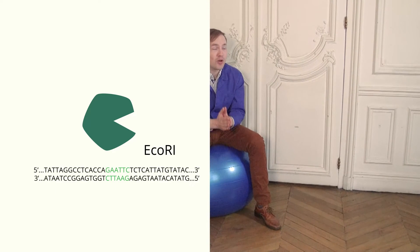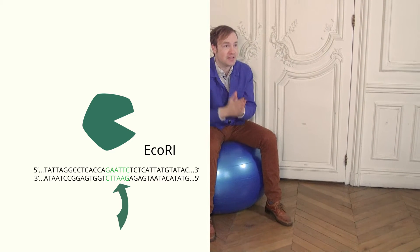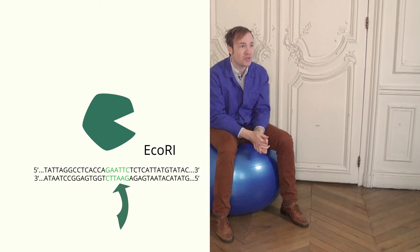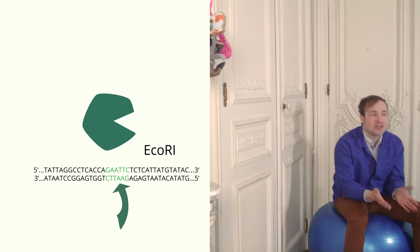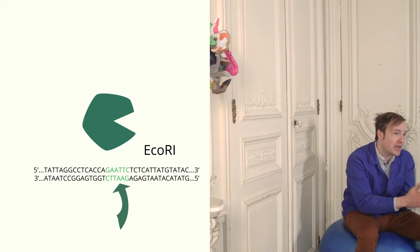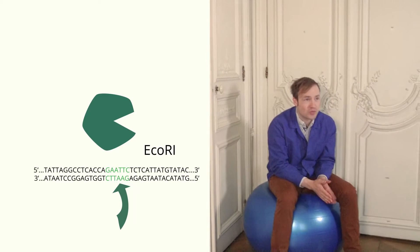ECO-R1 cuts DNA, but only at a specific sequence, GAA-TTC. It's highly specific and it doesn't cut any other sequence, even similar looking ones. The sequence is rare enough that it doesn't occur very often, just by chance, and if you don't like GAA-TTC, then there's dozens of other enzymes that you can buy that cut other sequences.